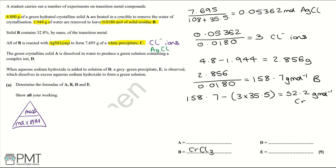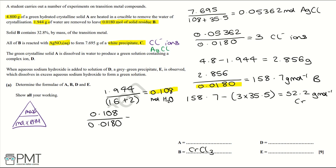Next, we work out the moles of water to find the formula for solid A. Using the equation triangle, we do 1.944 divided by 18 (the relative formula mass of water), which equals 0.108 moles of water. Looking at the molar ratio, 0.108 divided by 0.0180 equals 6. So the formula for A is CrCl₃·6H₂O — there are six waters of crystallisation.